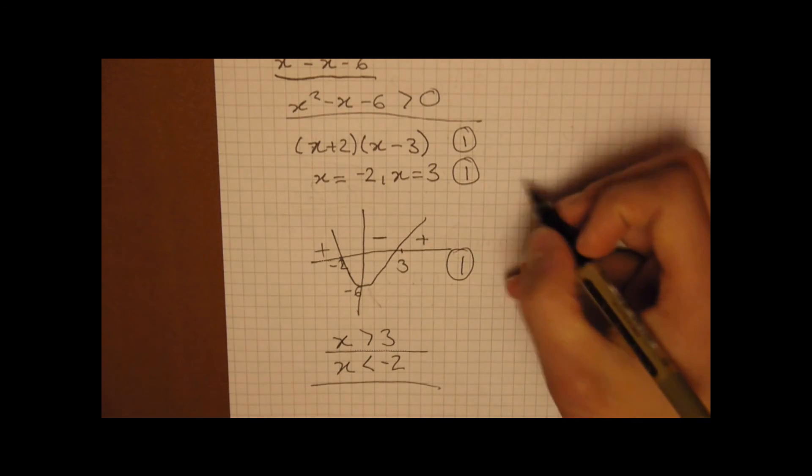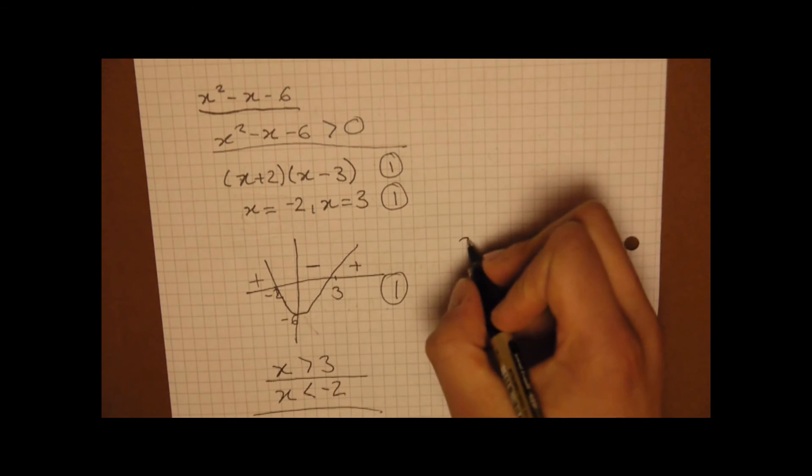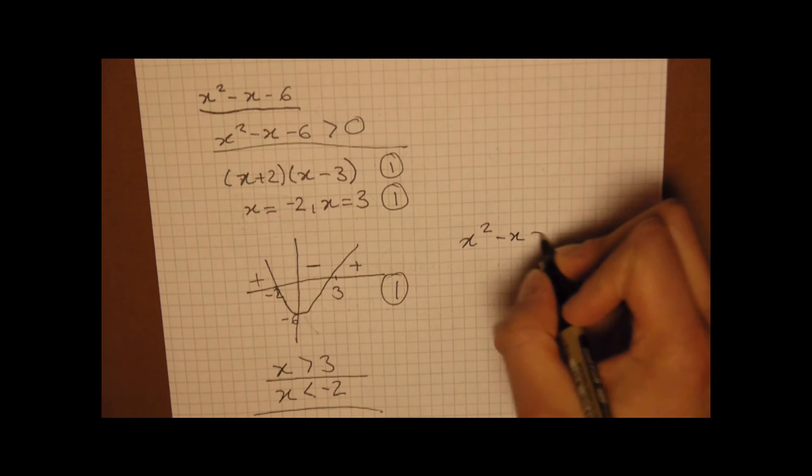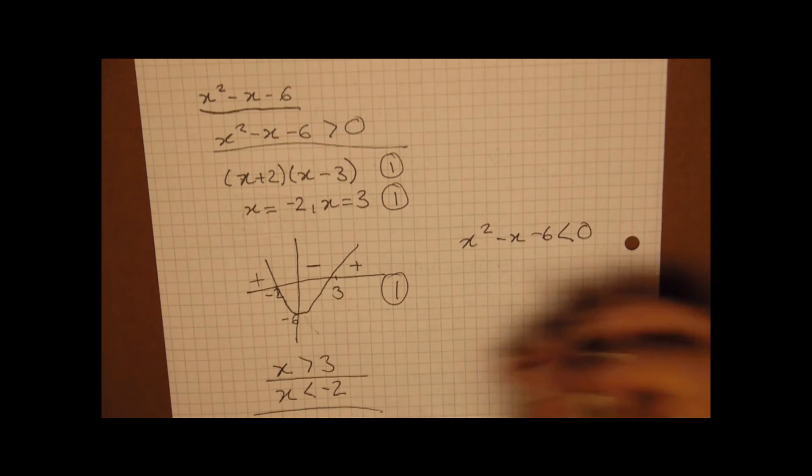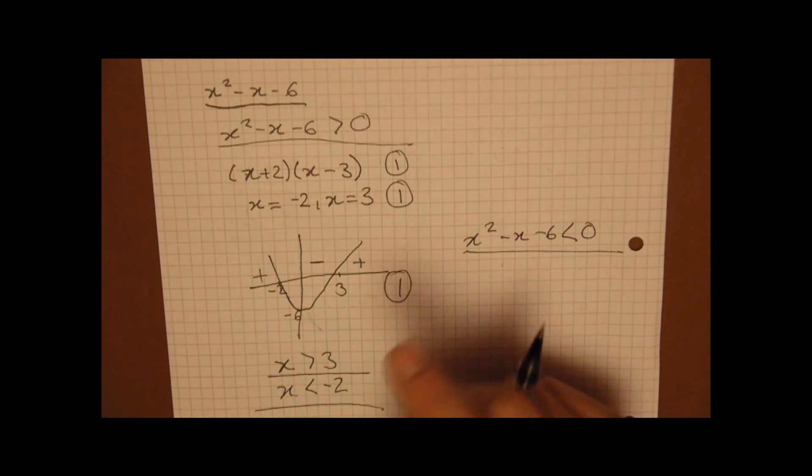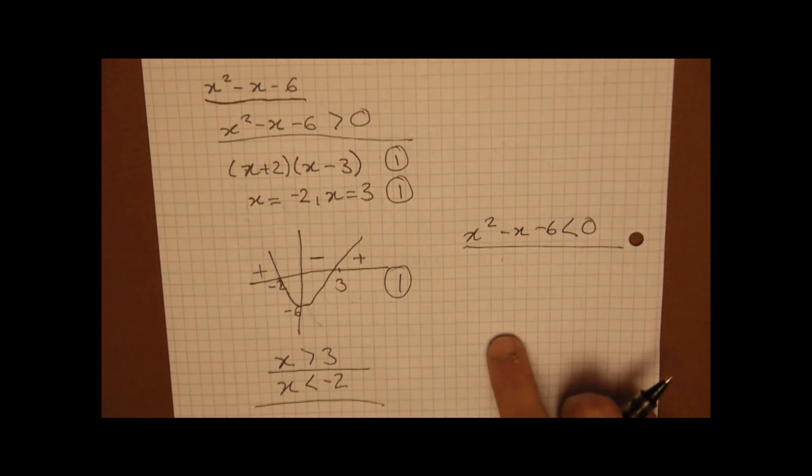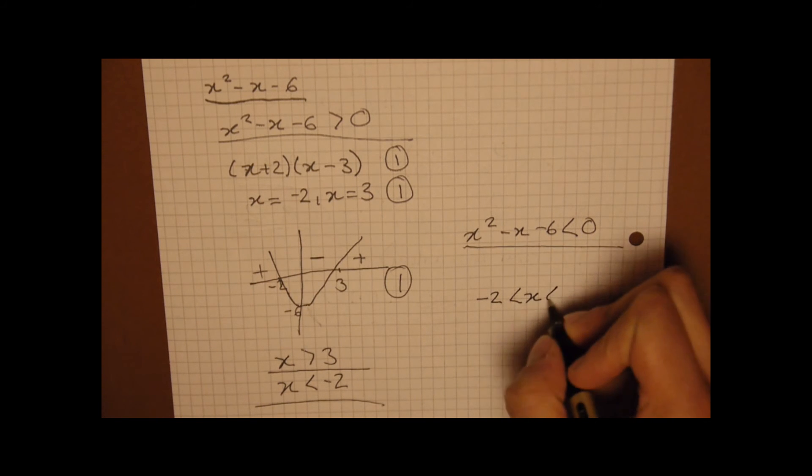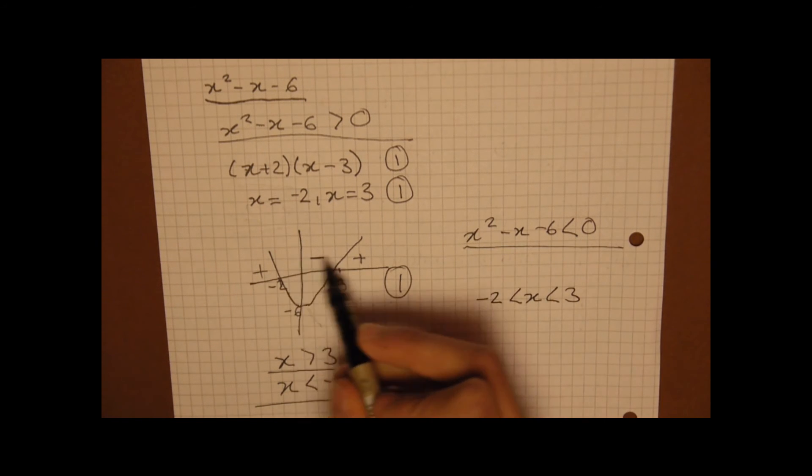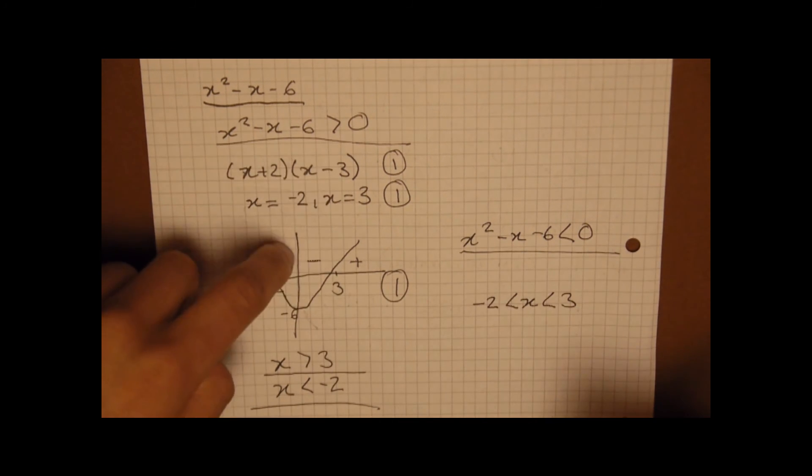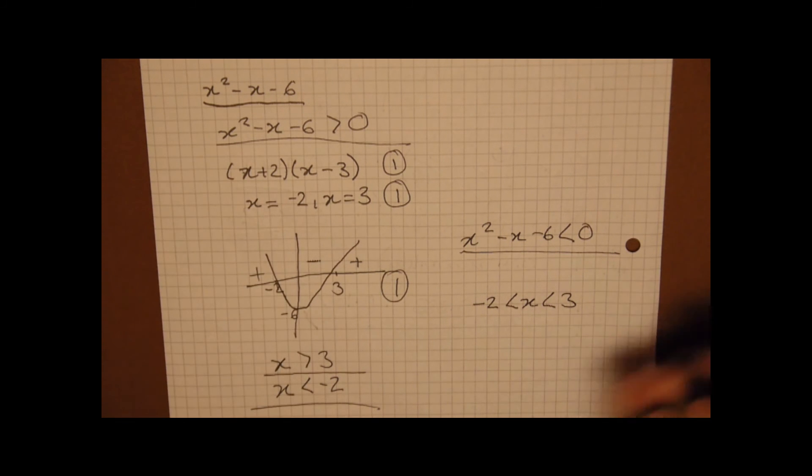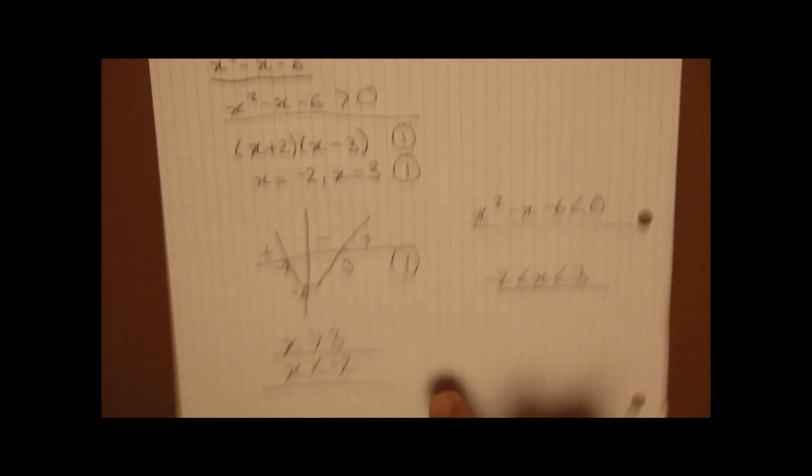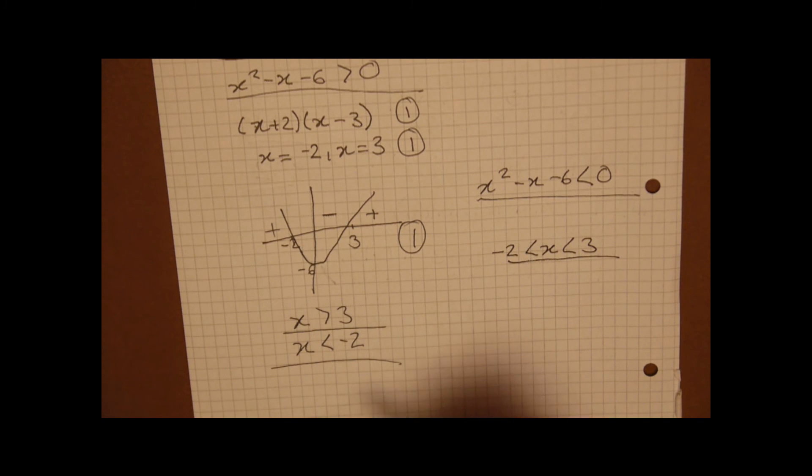Now, interestingly, if it was written as x squared minus x minus 6 is less than 0. Then we'd still, the working would all be the same, but our answer would not be that. Our answer would be minus 2 is less than x, which is less than 3. Because it's between minus 2 and 3. So we'd write it as a single inequality, whereas here we've had to write it as two separate inequalities.